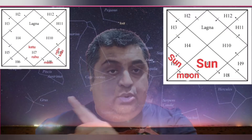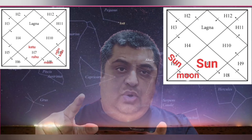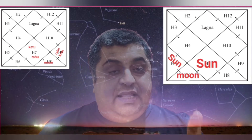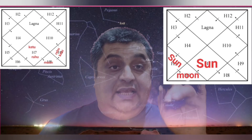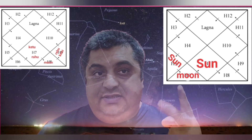Now the other part: even if Rahu and Ketu are sitting anywhere in the house — one house ahead or one house down the line — still this yoga applies. The same thing applies with the Sun also. Rahu, Ketu, and the Sun — two of them are shadow planets and the Sun is called Uppagraha. If either of them sits one house ahead or one house behind, still the yoga applies. It is still called Kemadrum Dosha.